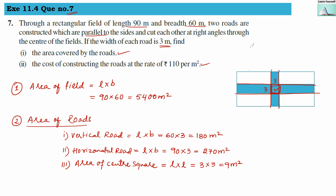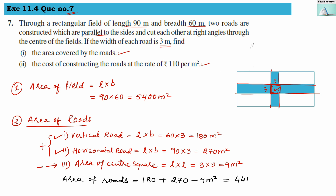Area of roads = vertical road + horizontal road − center square (subtracted once to cancel the double-counting). Area of roads = 180 + 270 − 9 = 441 meter square.